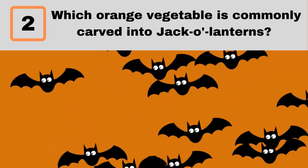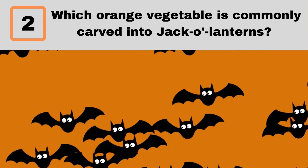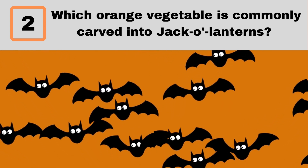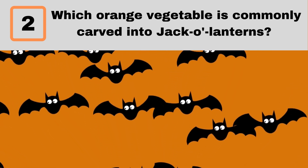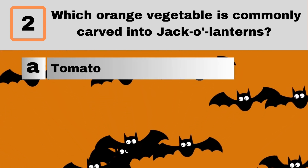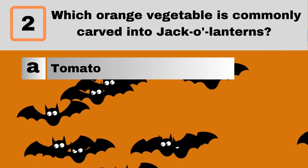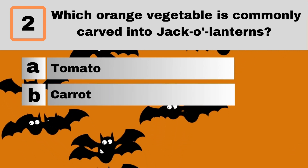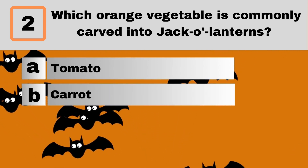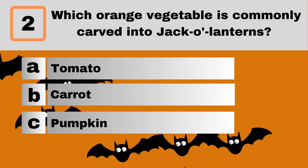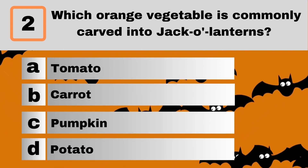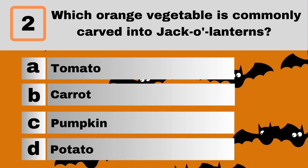Question 2. Which orange vegetable is commonly carved into jack-o'-lanterns? A. Tomato. B. Carrot. C. Pumpkin. D. Potato.